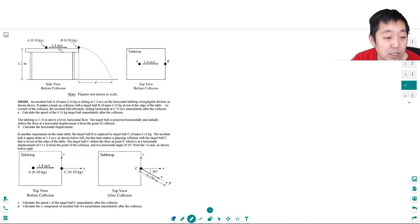Calculate the speed of the target ball immediately after the collision. Again, conservation of momentum. The thing about collisions is, unless they explicitly tell you that energy is conserved or that it's an elastic collision, you can never use conservation of energy. It's always conservation of momentum for collisions because there's no outside forces.